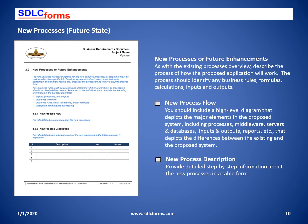Describe the proposed processes, highlighting differences between the existing and proposed processes. As with how you define existing processes, the proposed processes should include the business workflow, any algorithms, decisions, validations, exception handling, user interactions, when tasks are performed, and what the expected results are. The proposed process flow should be fairly detailed, depicting the data architecture including every element in the design, and the proposed process description should explain how the entire process works.